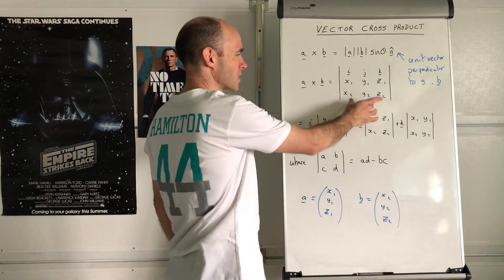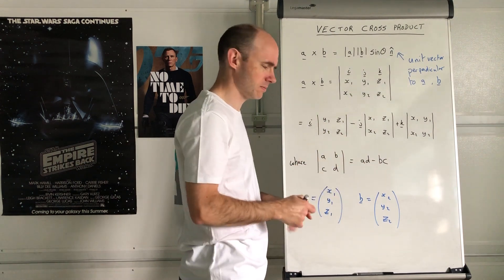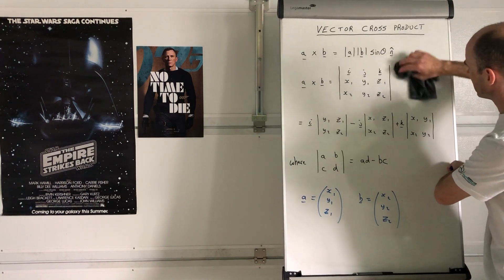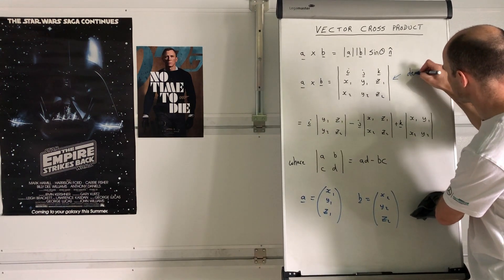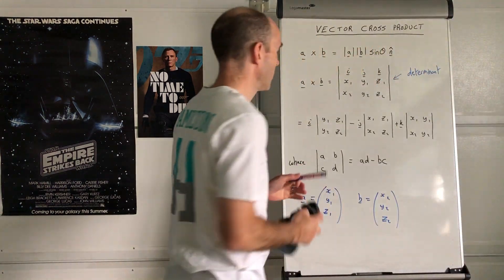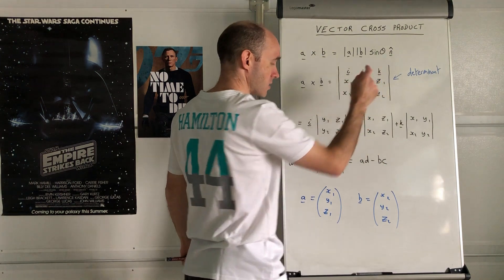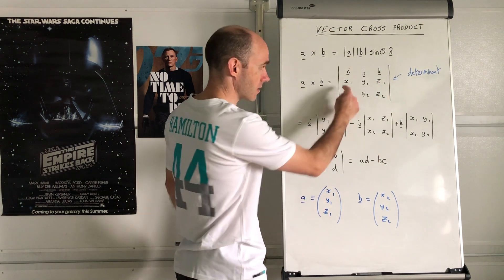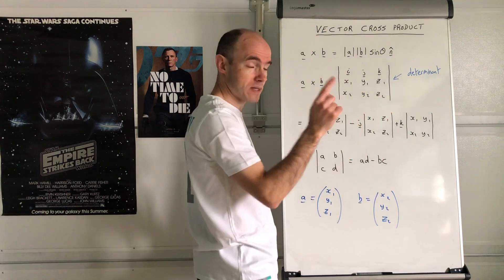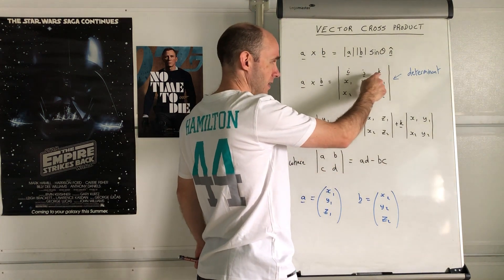This might look new to you. The straight-line brackets in this sense mean 'determinant' — det, D-E-T, for short. You're going to have to work out the determinant of this matrix. It says i, j, k at the top row, then you've got x1, y1, z1 from the first vector, and x2, y2, z2 from the second vector. Those numbers just go there, but you always have the i, j, k row at the top, because this is going to give us the component in the i, j, k direction.